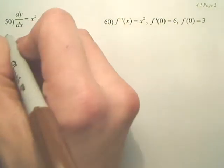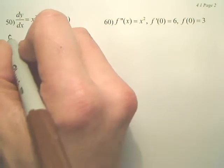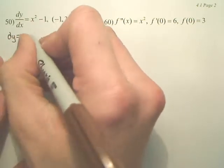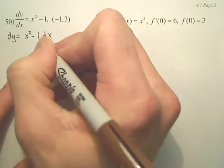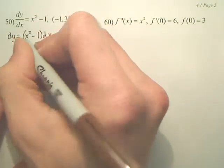So the first thing I'm going to do is write this as dy equals x squared minus 1 dx. I'm going to first write it as a differential.